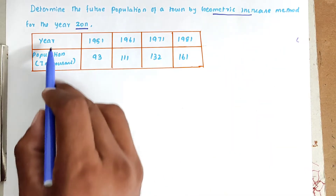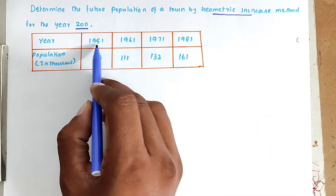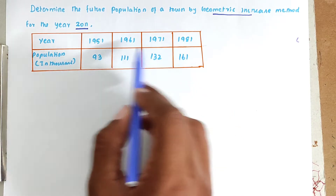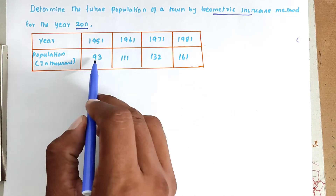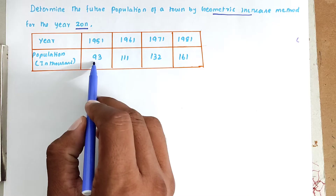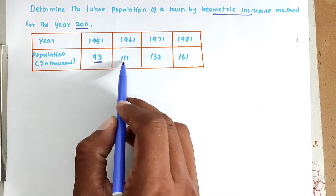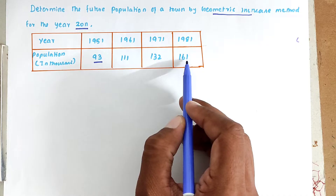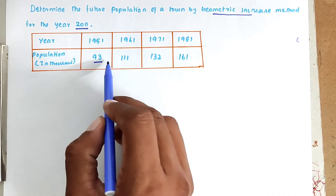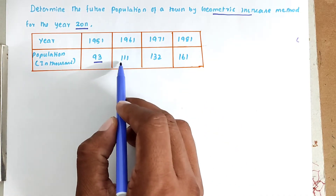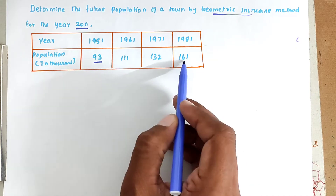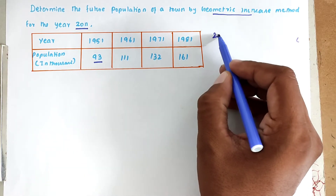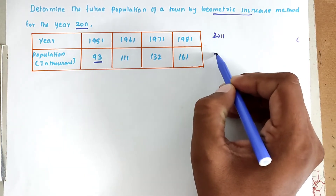The years given are 1951, 1961, 1971, and 1981. The corresponding populations in thousands are 93,000, then 1,11,000, then 1,32,000, then 1,61,000. We have to find out the population for 2011.